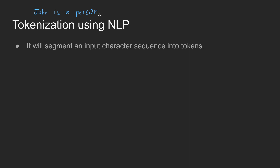If you think about this sentence, in this case: 'John' is one word, 'is' is one word, 'a' is one word, 'person' is one word.